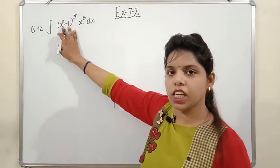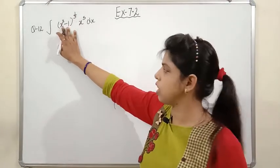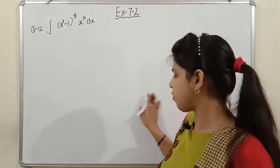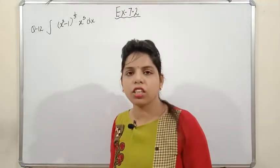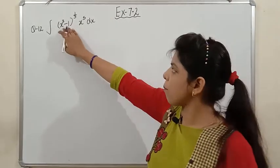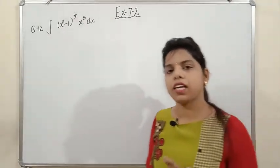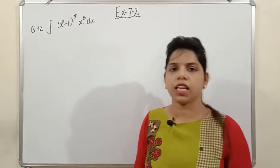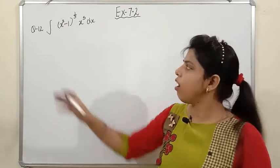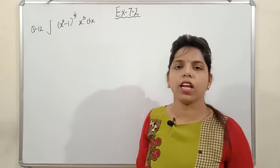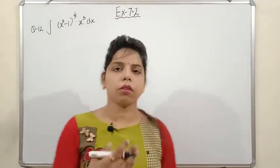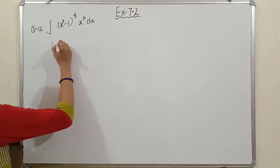The general rule: whenever there is a radical power on a function — a power in fraction form — choose t accordingly. If the radical power is 1/2, take t squared. If it is 1/3, take t cubed. If it is 1/4, take t to the power 4. Proceed similarly for other radical powers.